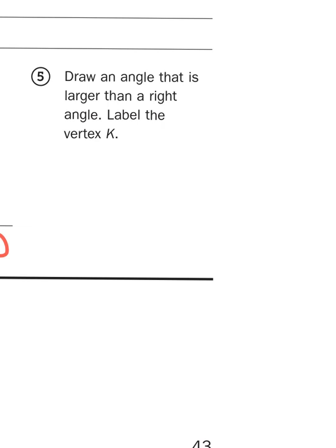You could draw an obtuse angle, something like this, that goes beyond 90 degrees. We're going to label that K right there. We'll say J, K, I.